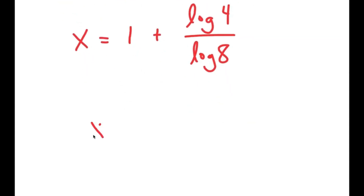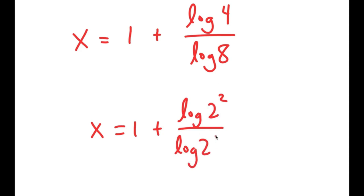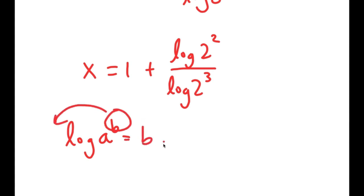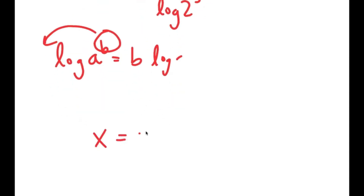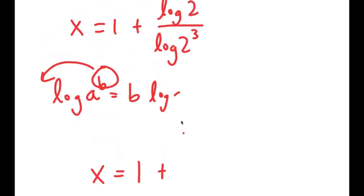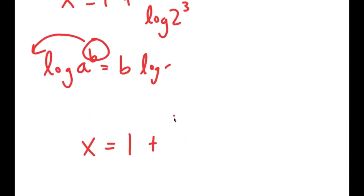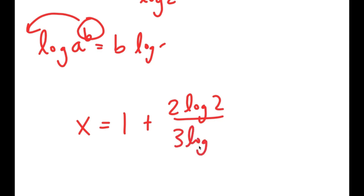Now, log of 4 is the same thing as log of 2 squared, and log of 8 is the same thing as log of 2 to the power of 3. If I have something in the form log of a to the power of b, I can move b to the front. So I get x is equal to 1 plus 2 times log 2 over 3 times log 2.